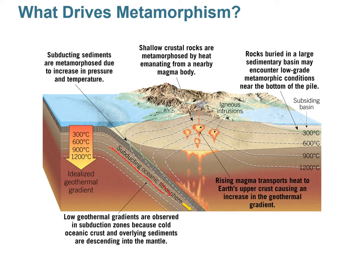Here's a subduction zone example: a down-going ocean plate and an overriding continental plate. As the down-going plate reaches the asthenospheric mantle, it releases fluids, lowering mantle melting temperatures and creating melts that rise buoyantly through the overriding plate. Most never erupt at volcanoes and instead crystallize deep underground as intrusive igneous rocks — but these melts provide heat to existing rock, causing metamorphism.